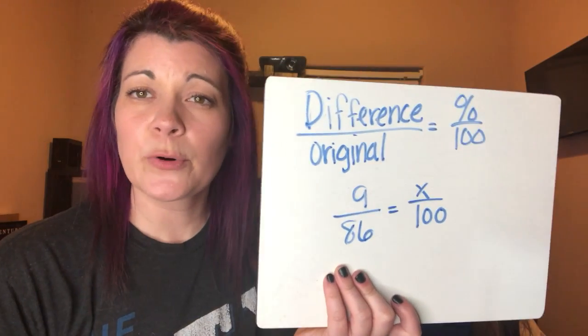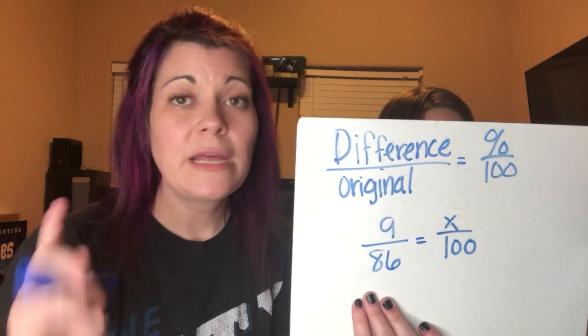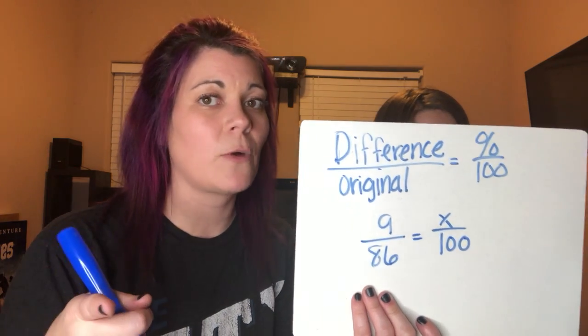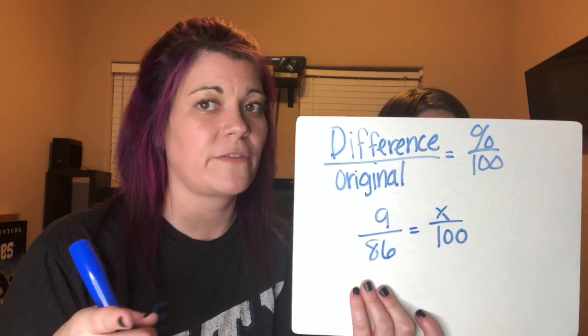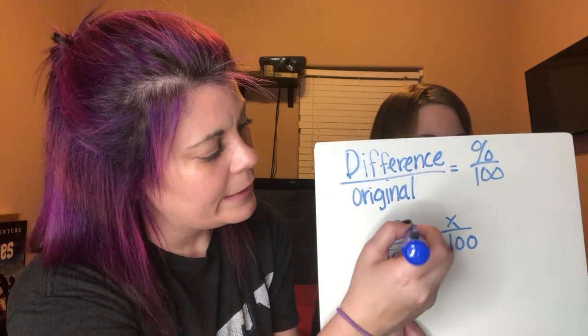So we say 95 minus 86, which is 9. Then we put it over the original — what we started with. He went from 86 to 95, so 86 is the original. We put 9 over 86 equals x over 100, because we're looking for the percent of change. We solve this proportion like every other proportion — if you don't know how, go watch my proportion video.